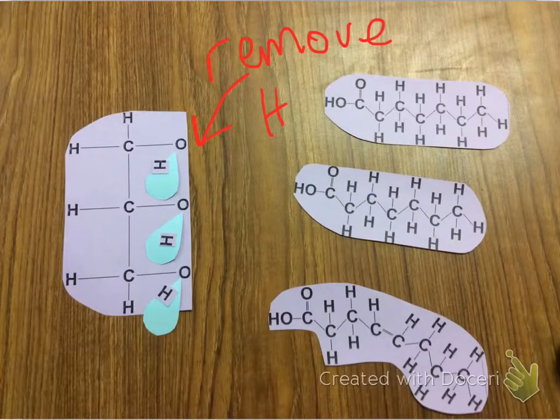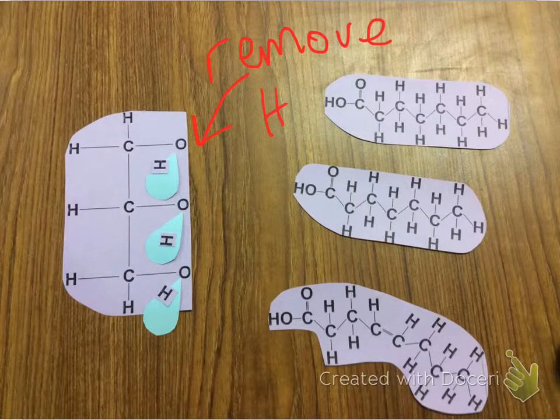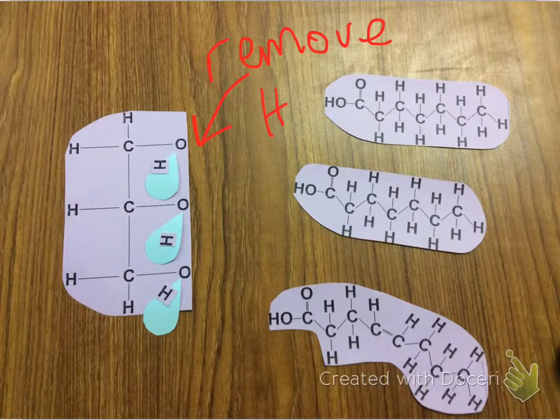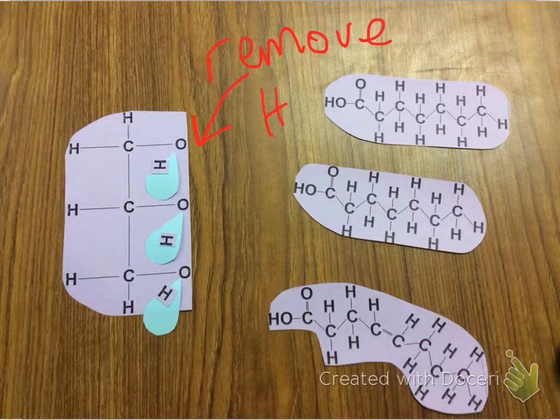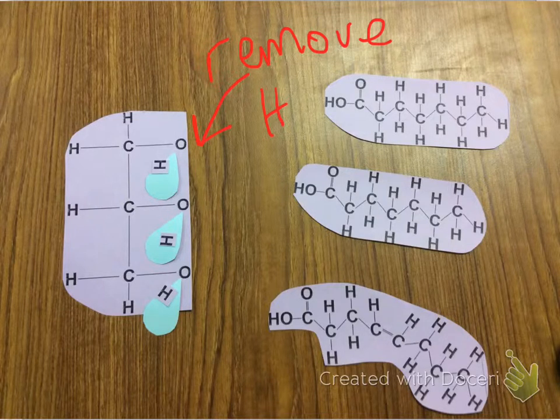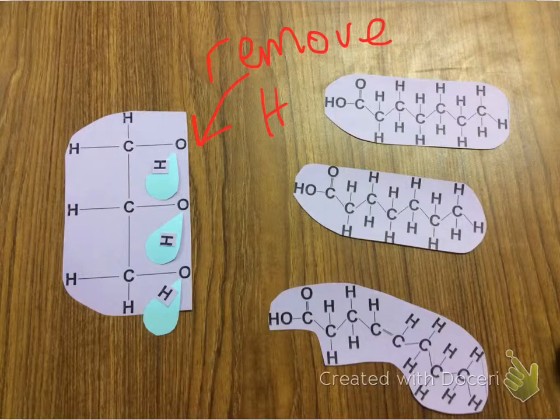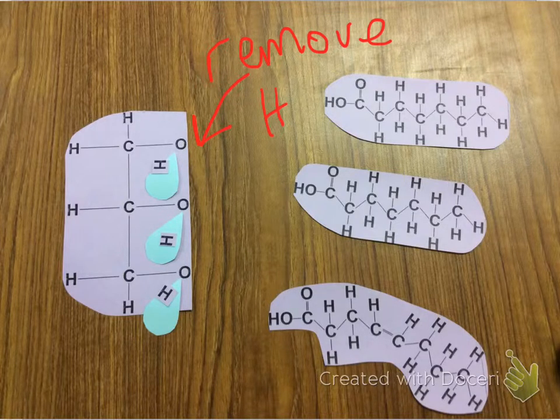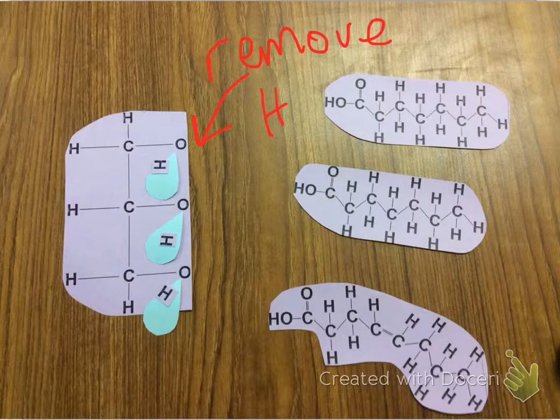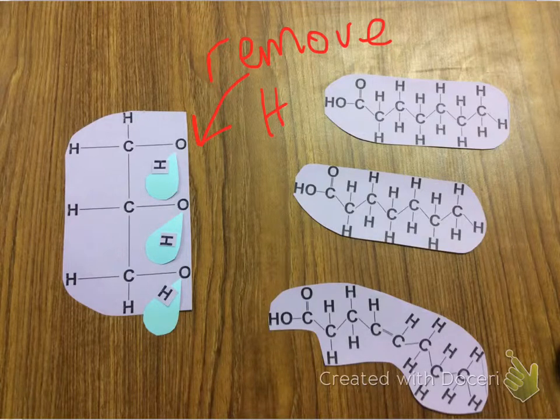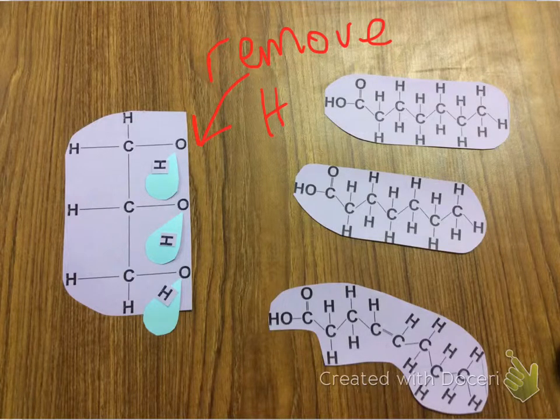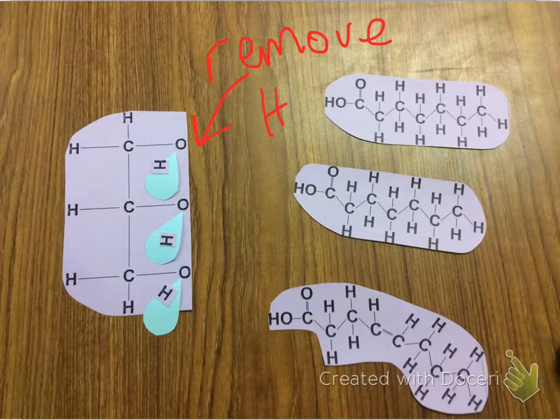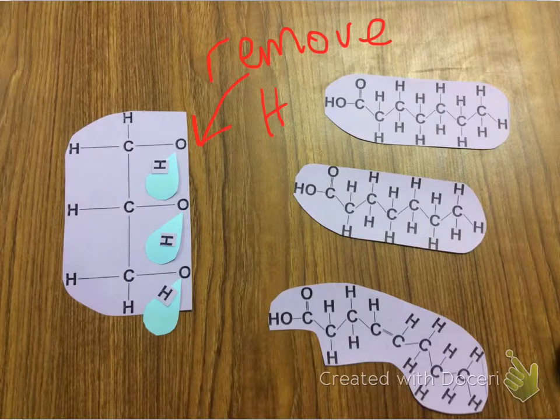The first thing that's going to happen is the hydrogen over here is going to be removed. That's going to be part of the water that is removed during dehydration synthesis. We're removing all of that because we're attaching three fatty acid chains to this glycerol backbone at each of these three spots. We're going to be removing three molecules of water in the process, so that's where the first hydrogen comes from.